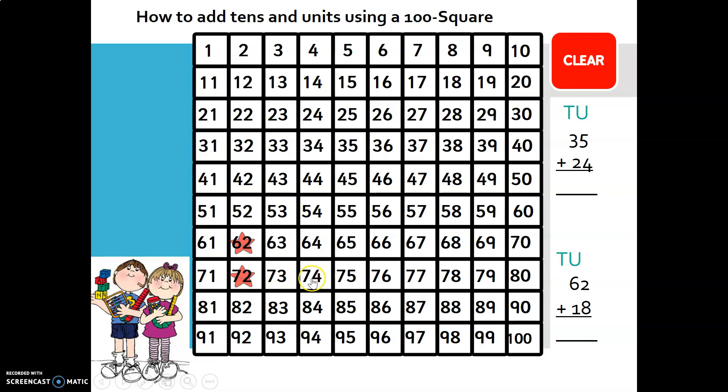And now we must add 8 units: 1, 2, 3, 4, 5, 6, 7, 8. So 62 and 18 is 80.